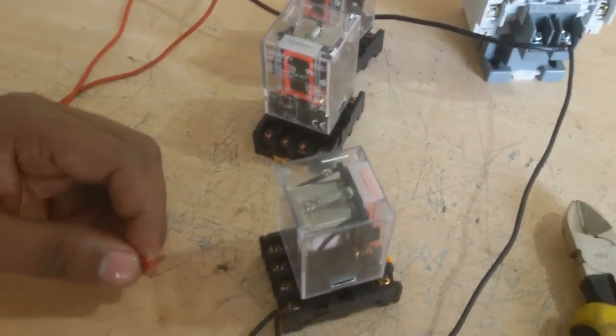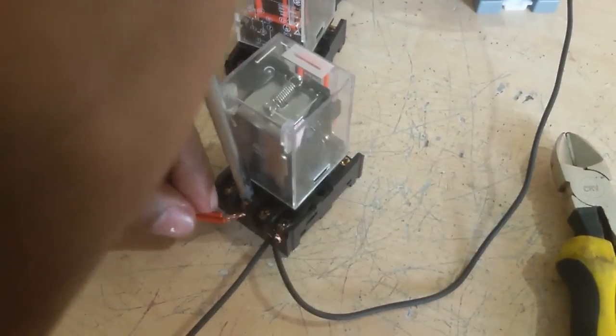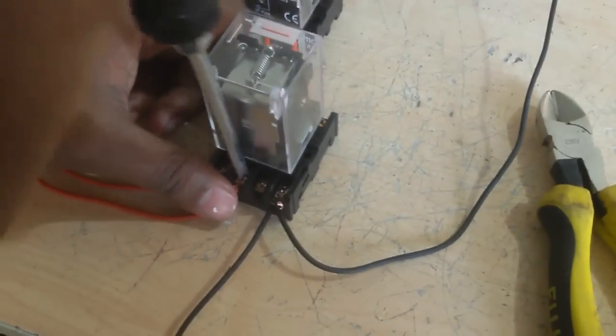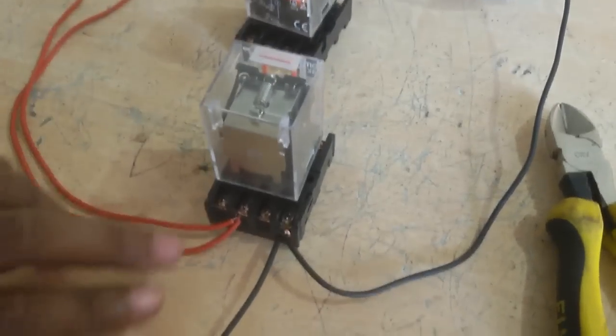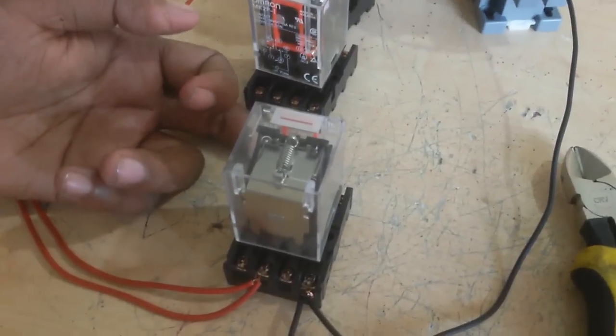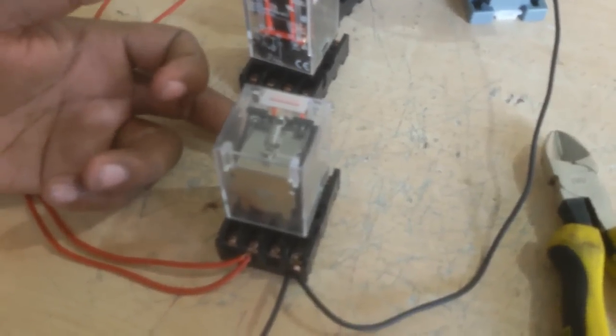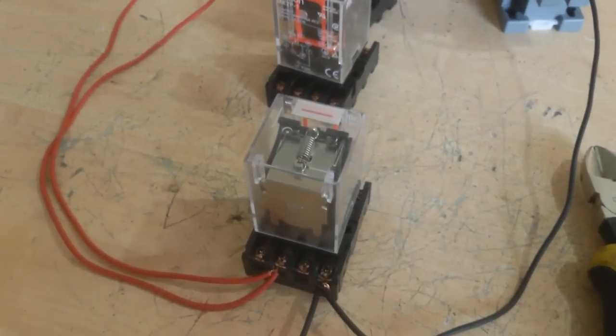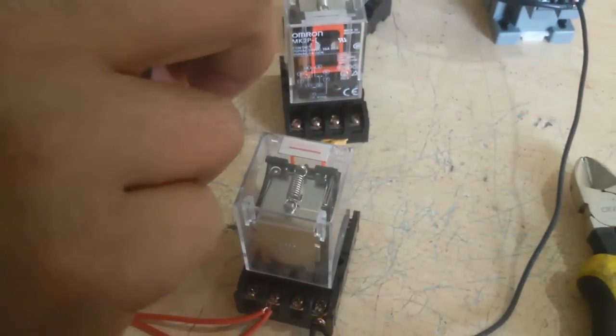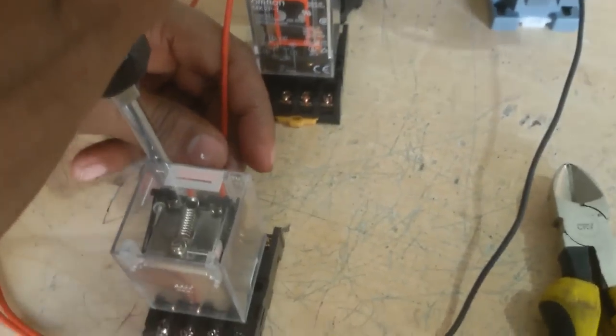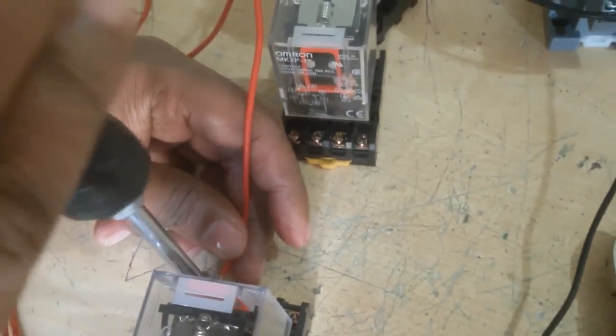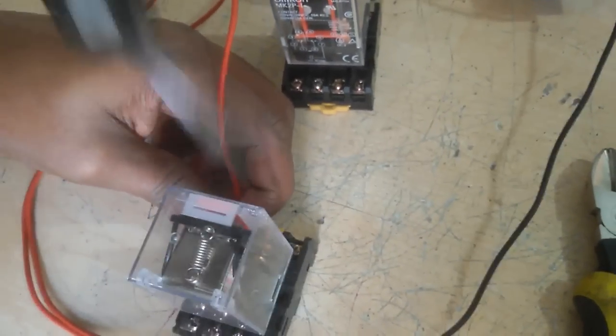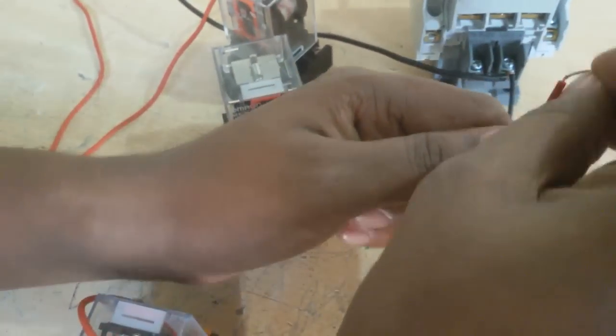This direct phase line connects to relay 1 NC common. It is 8 number terminal and I take here NO. This terminal with 5 number is NC and 6 number terminal is NO. I take here NO. This NO connects a wire and this wire connects directly with the contactor A1.